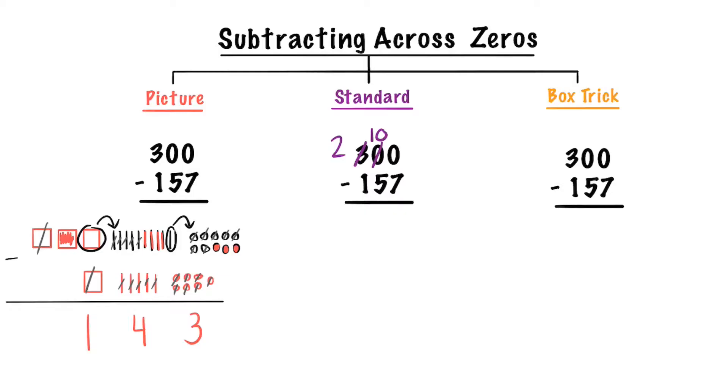So we're going to take one of those tens and we're going to be left with nine tens. And now we can give those over to our ones place. So let's go ahead and add 10 that we just took away from the tens place. 10 take away 7 is 3, 9 take away 5 is 4, and 2 take away 1 is 1.